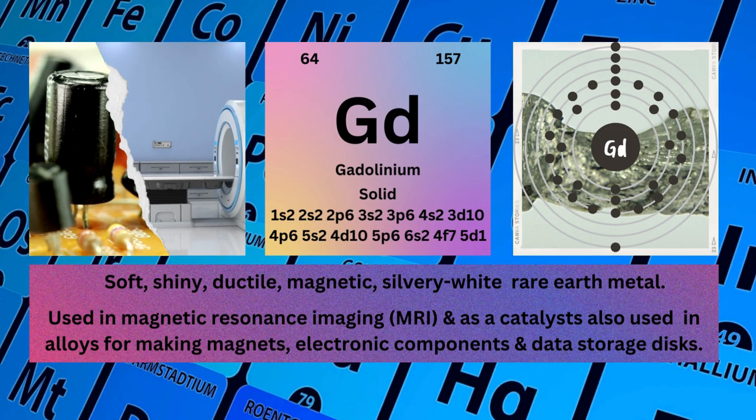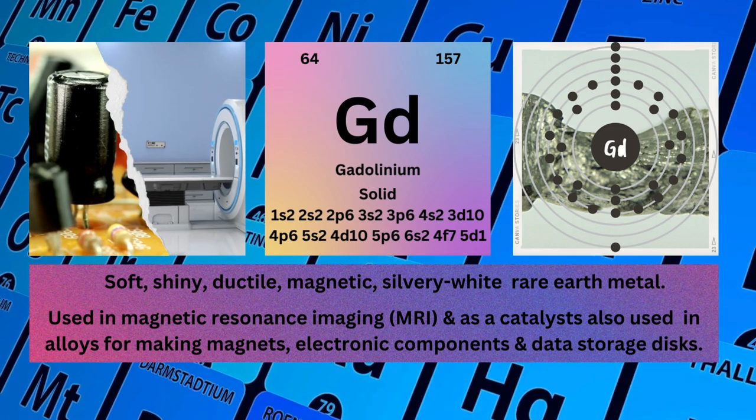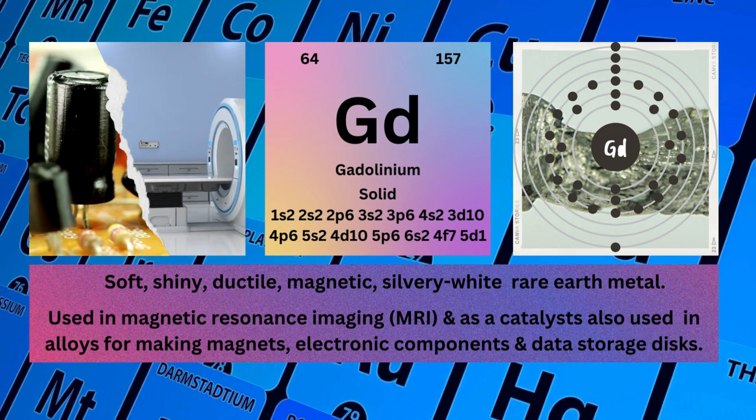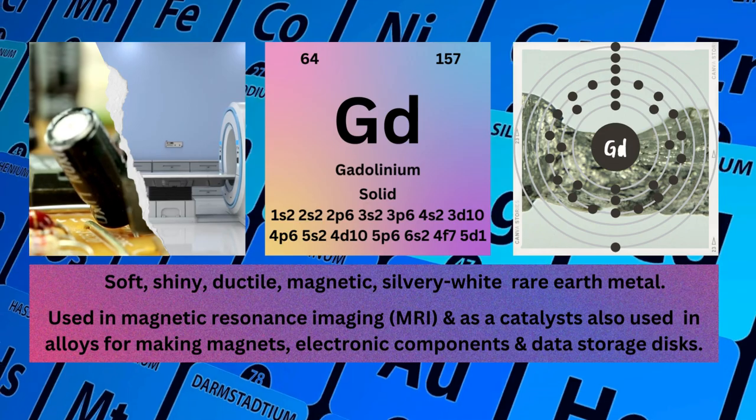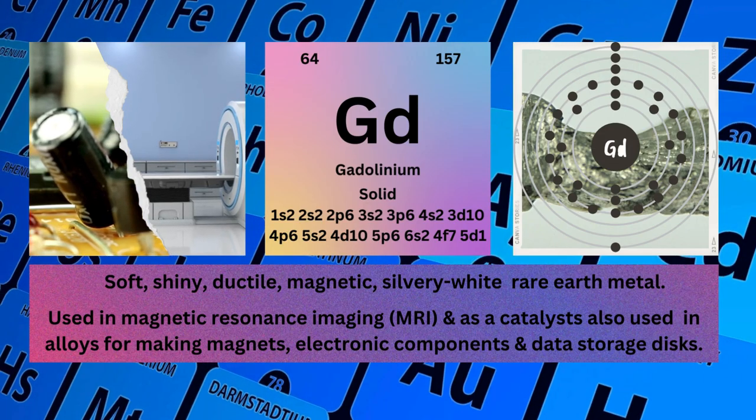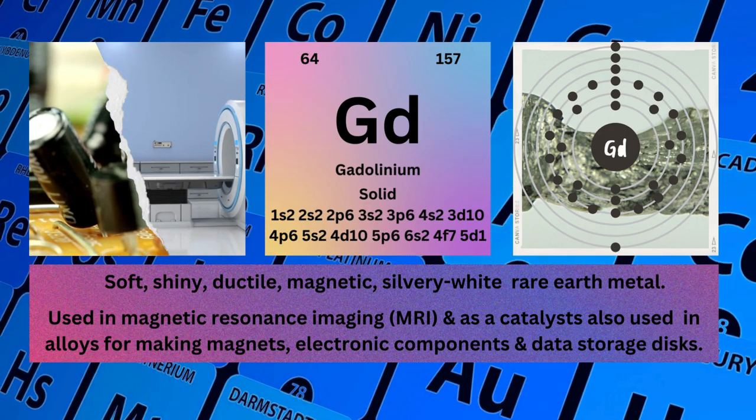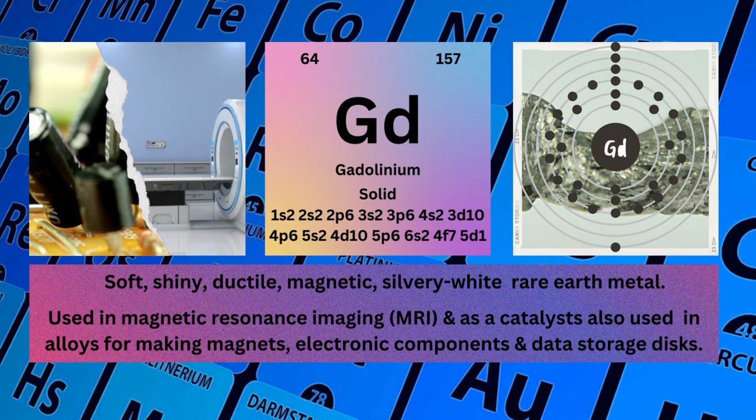Gadolinium is used in magnetic resonance imaging (MRI) and as a catalyst, also used in alloys for making magnets, electronic components and data storage disks.